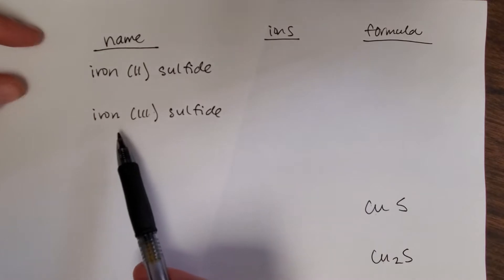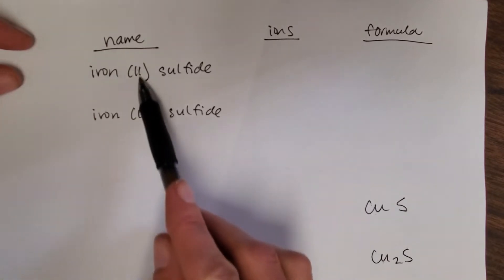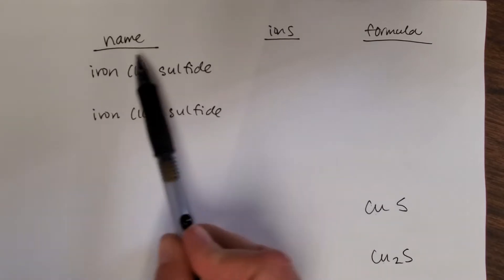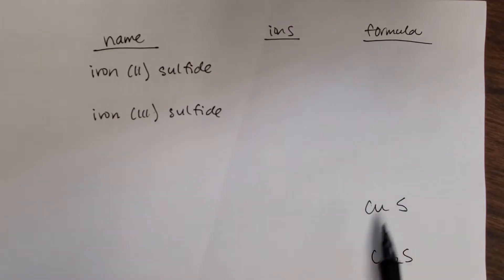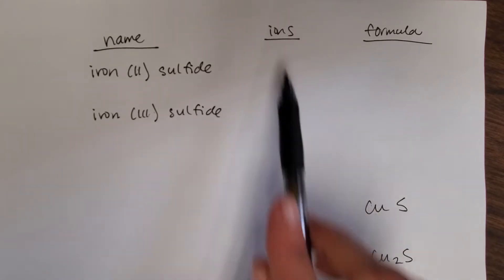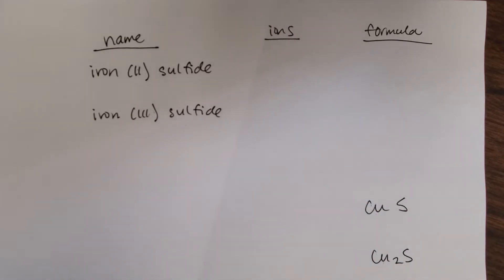We always need Roman numerals with iron and with copper. A second thing: you'll always be given either the name to work to the formula or the formula to work to the name, so you don't have to make these compounds up. Third thing to think about is you always want to stop with ions in the middle of your process.